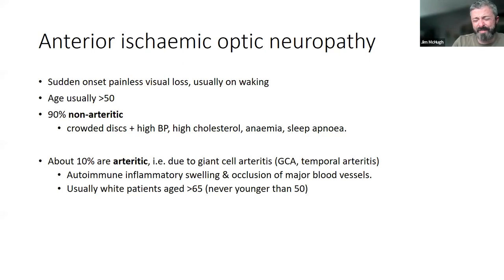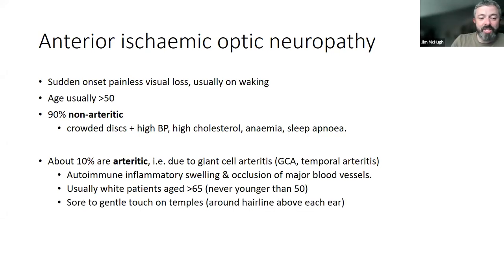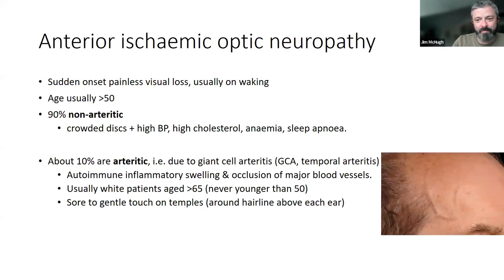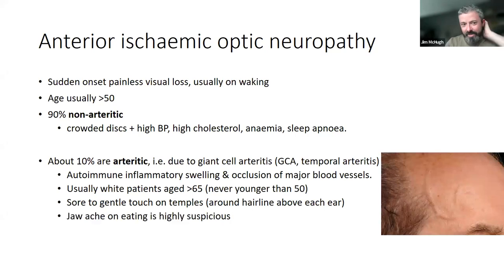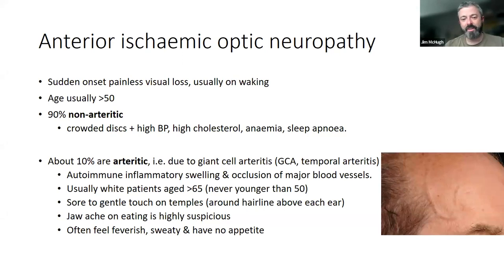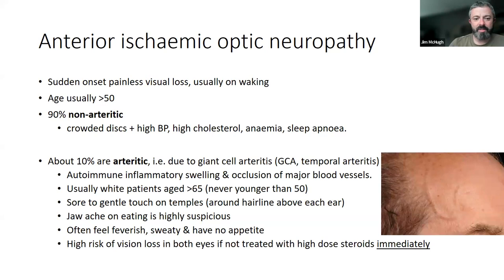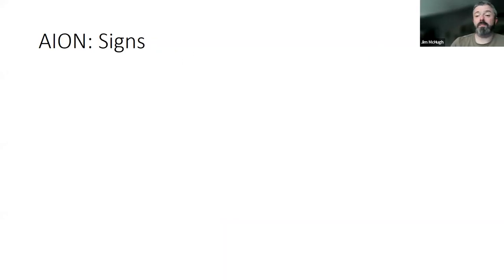Giant cell arteritis primarily affects white people and is pretty unusual in other ethnic groups — they are always old. They usually have tender temples, sometimes visibly prominent. The key feature is jaw claudication: when they eat, their jaw builds up more and more ache, and when they stop it wears off — that's a sign of jaw or tongue muscles not getting enough blood supply. They often feel feverish, ill, and have lost their appetite. These patients are a real emergency: they need to go to A&E and need massive doses of steroids, because that way you prevent them losing vision in both eyes. Sometimes we miss it, because it's easily missed.